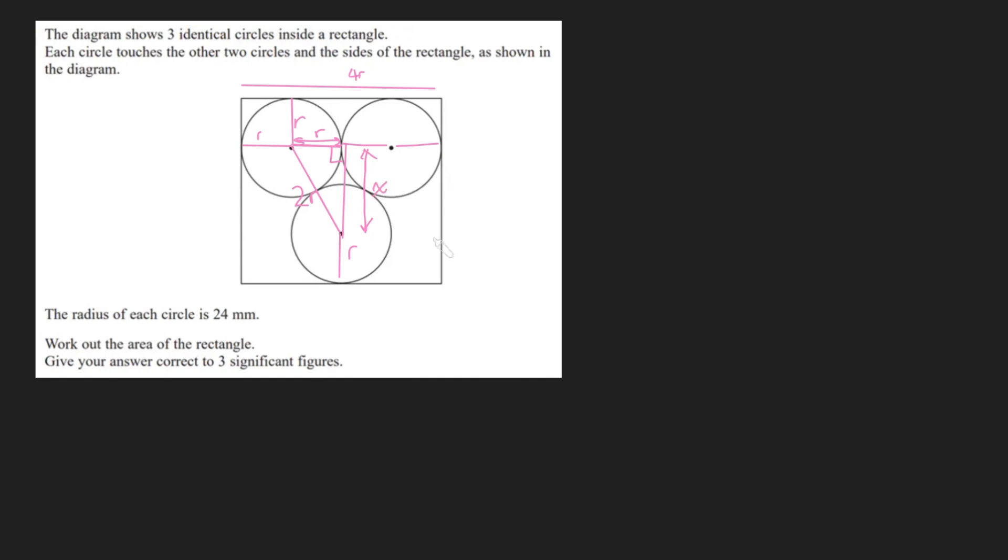So the question is, what is this length here? We can use Pythagoras' theorem to help us work that out. Let's call it X. So we can say X squared plus R squared equals 2R all squared. And so we get X squared plus R squared equals 4R squared. Bringing that onto that side, we get X squared is 3R squared. And square rooting, we get X is root 3 times R.